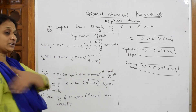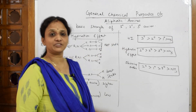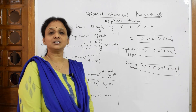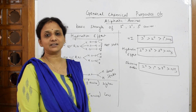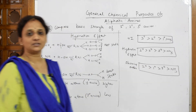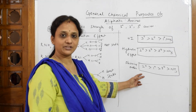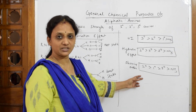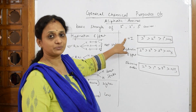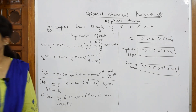So combining the +I effect (explained in the earlier video) and the hydration effect (explained here), the final observed order is secondary greater than primary greater than tertiary greater than ammonia. Remember in the exam: if they ask based on +I effect, apply that order; if they ask based on hydration effect, apply that order specifically.